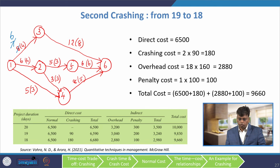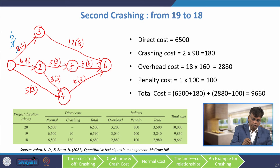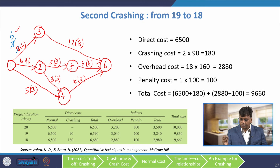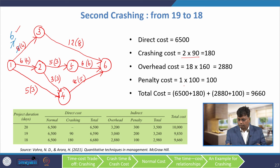Second crashing: from 19 to 18 days. We again reduce activity 1-3 from 7 to 6 days (2 days total reduction). Direct cost: 6,500 + 2 × 90 = 6,680. Overhead: 18 × 160 = 2,880. Penalty: 1 × 100 = 100. Total cost = 9,660. The critical path is still 1-3-6.